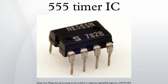In the monostable mode, the 555 timer acts as a single pulse generator. The pulse begins when the 555 timer receives a signal at the trigger input that falls below one-third of the voltage supply. The width of the output pulse is determined by the time constant of an RC network, which consists of a capacitor and a resistor. The output pulse ends when the voltage on the capacitor equals two-thirds of the supply voltage. The output pulse width can be lengthened or shortened by adjusting the values of R and C.